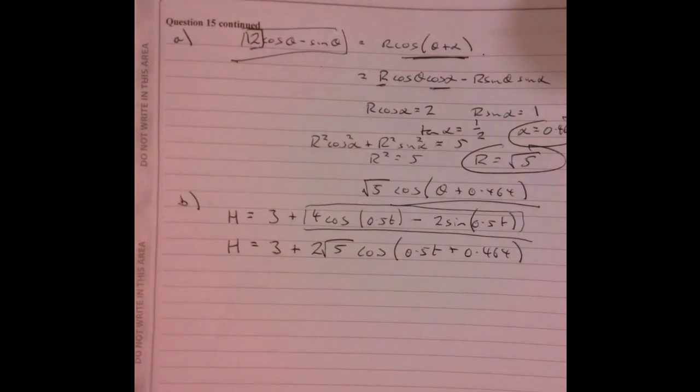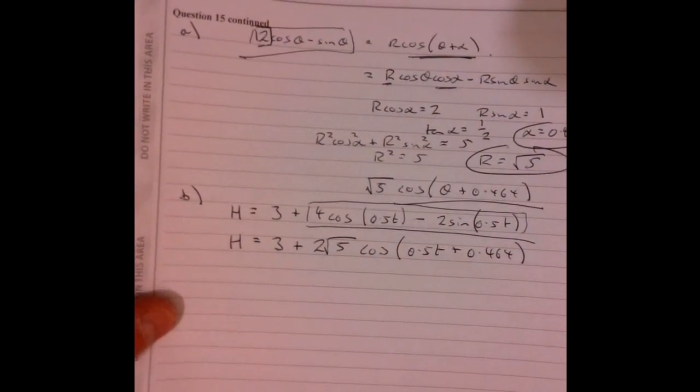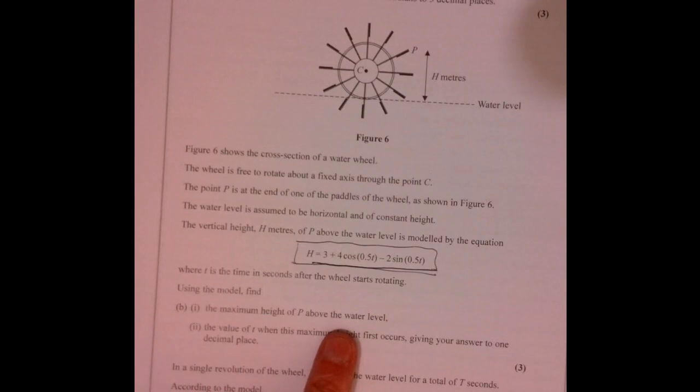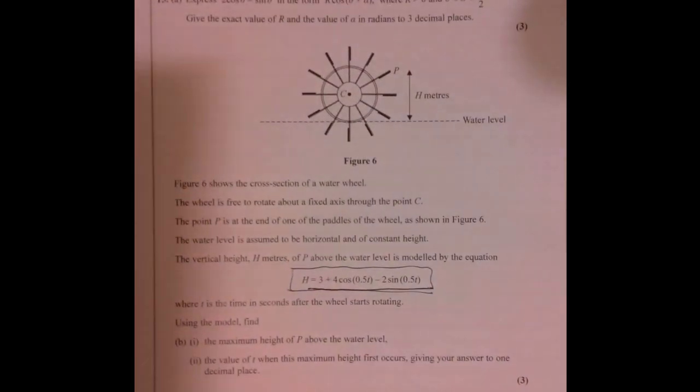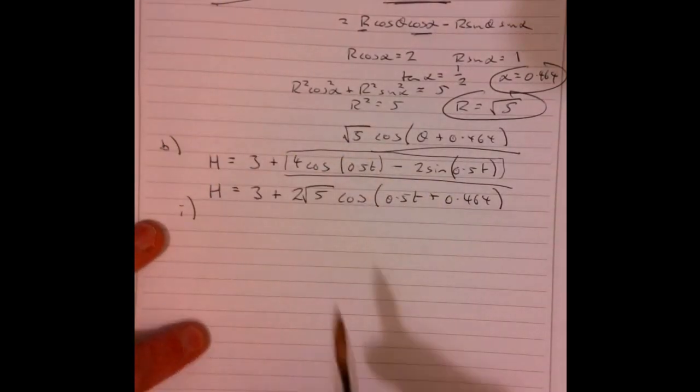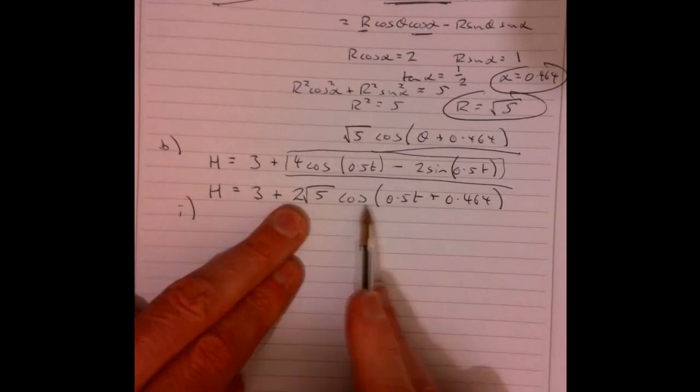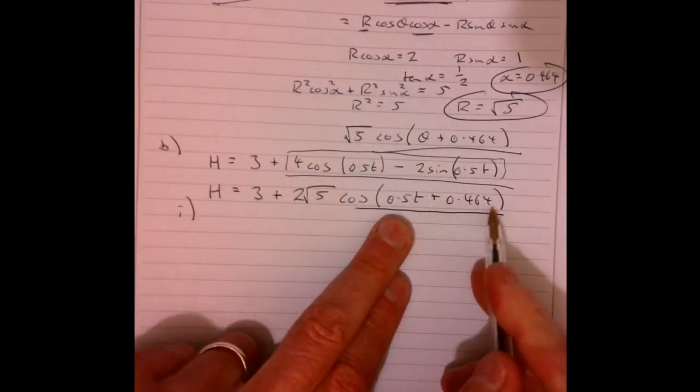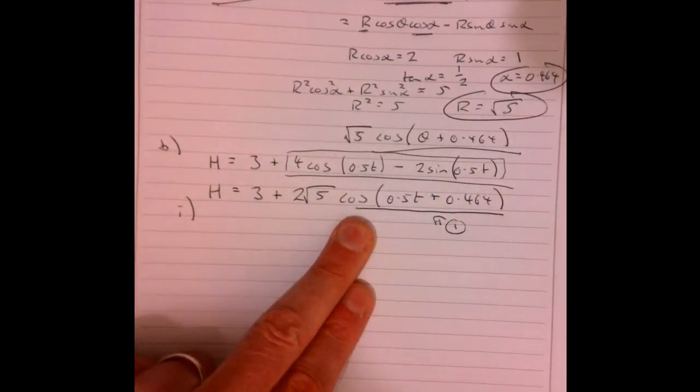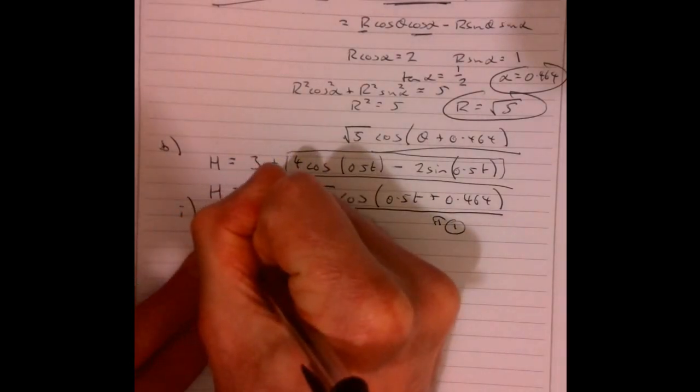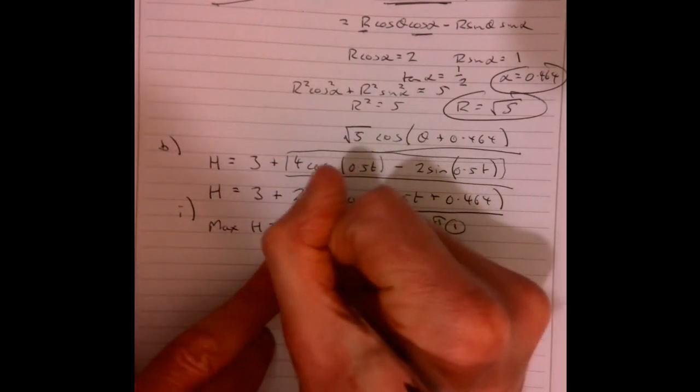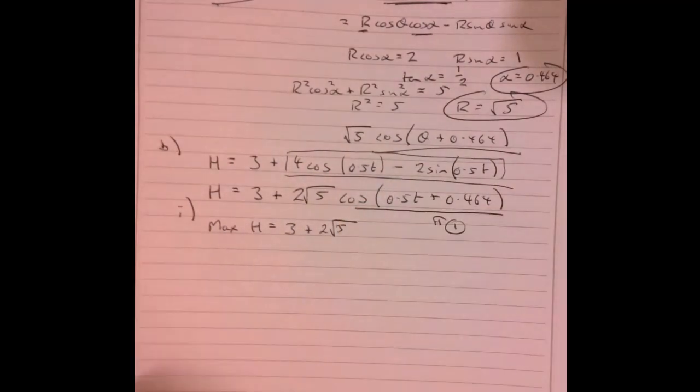And now that's really the hardest bit of the question. Now let's go and actually look and see what the question's actually asking us to do. So the first bit of the question is find the maximum height of P above the water level. So the maximum height is when this bit equals 1, because cos of something, the highest it can be is equal to 1. So the max height will equal 3 plus 2 root 5.